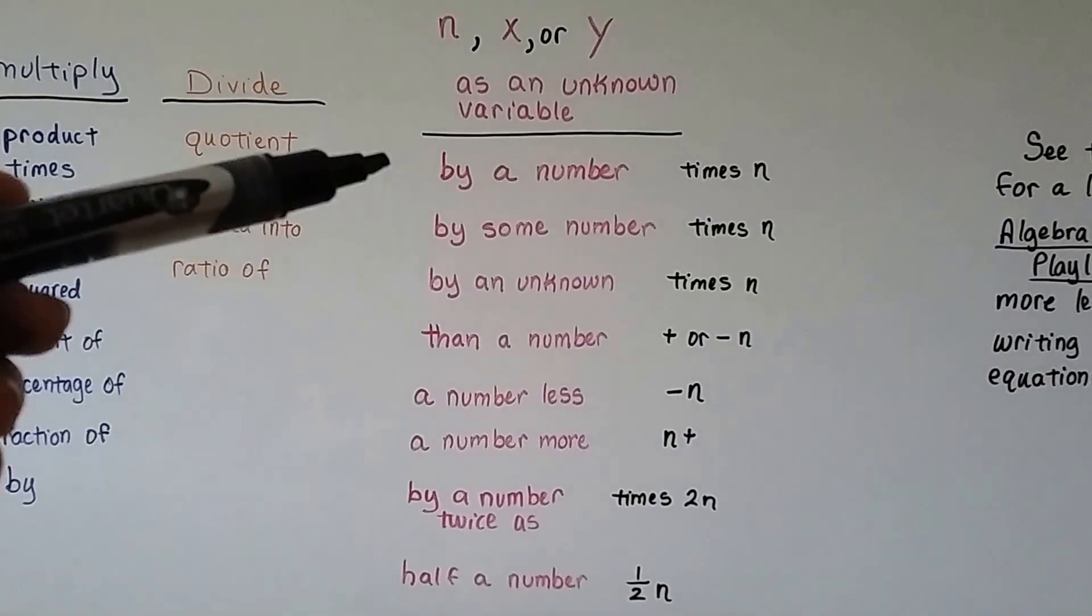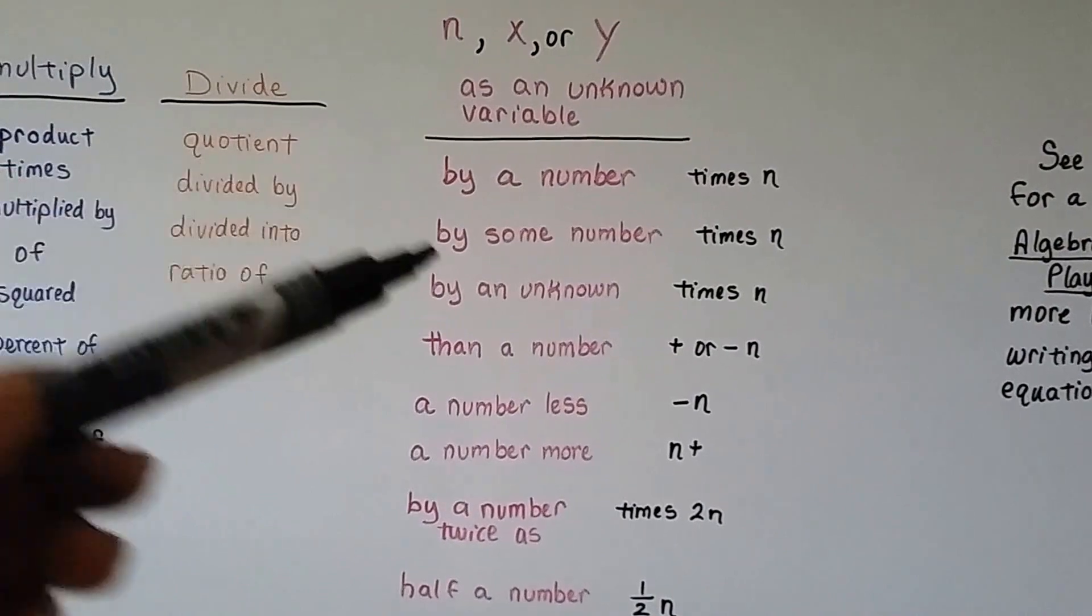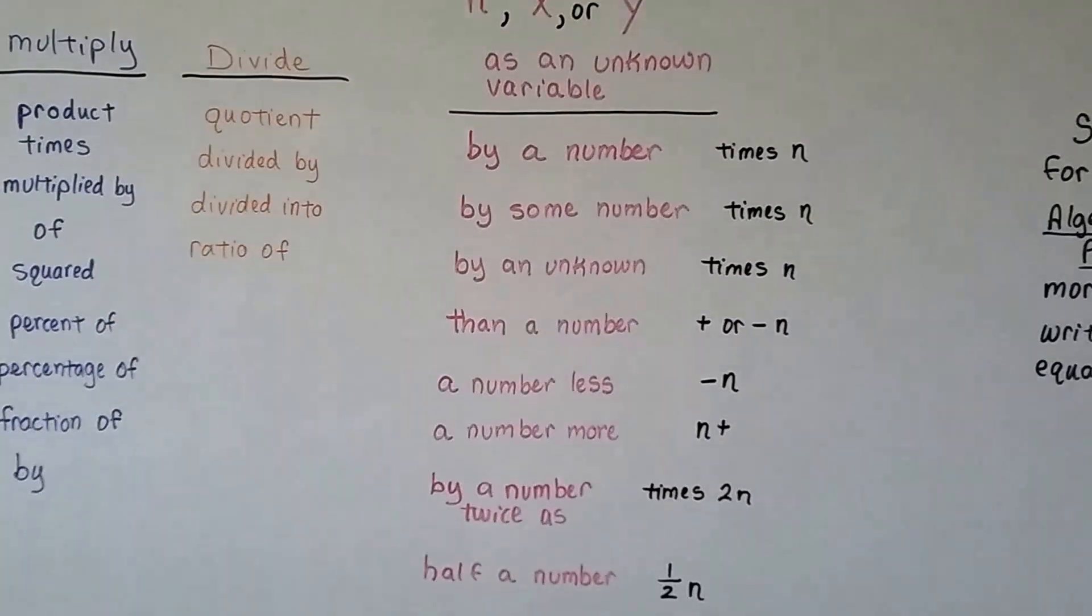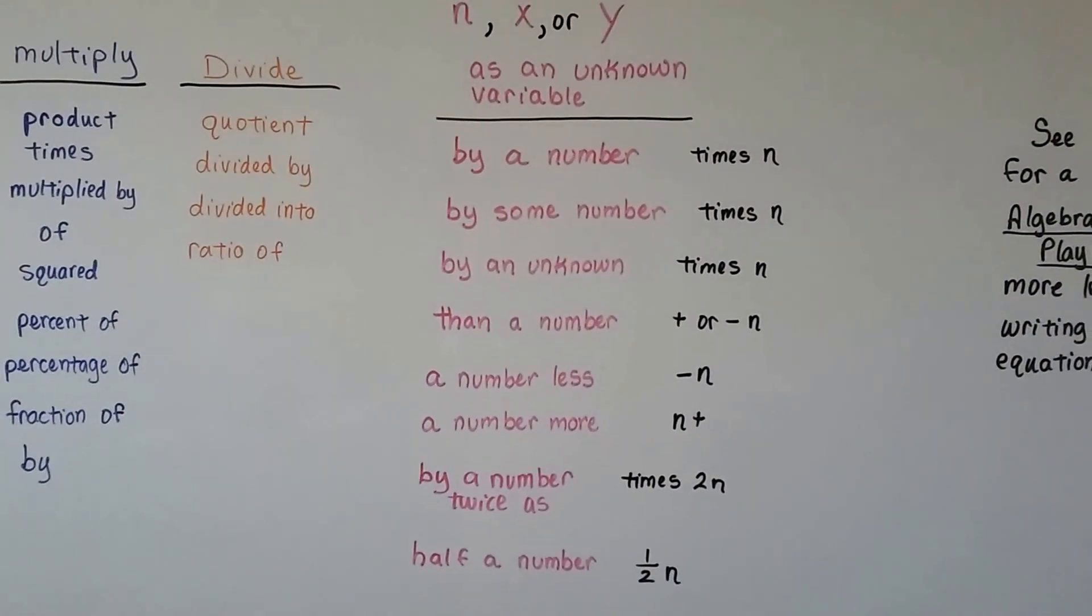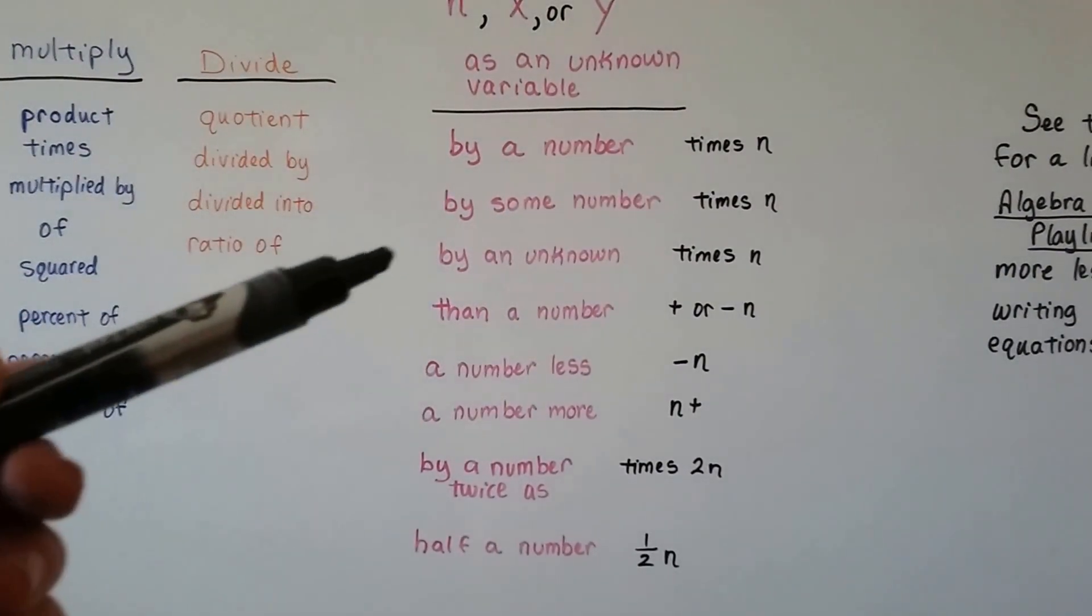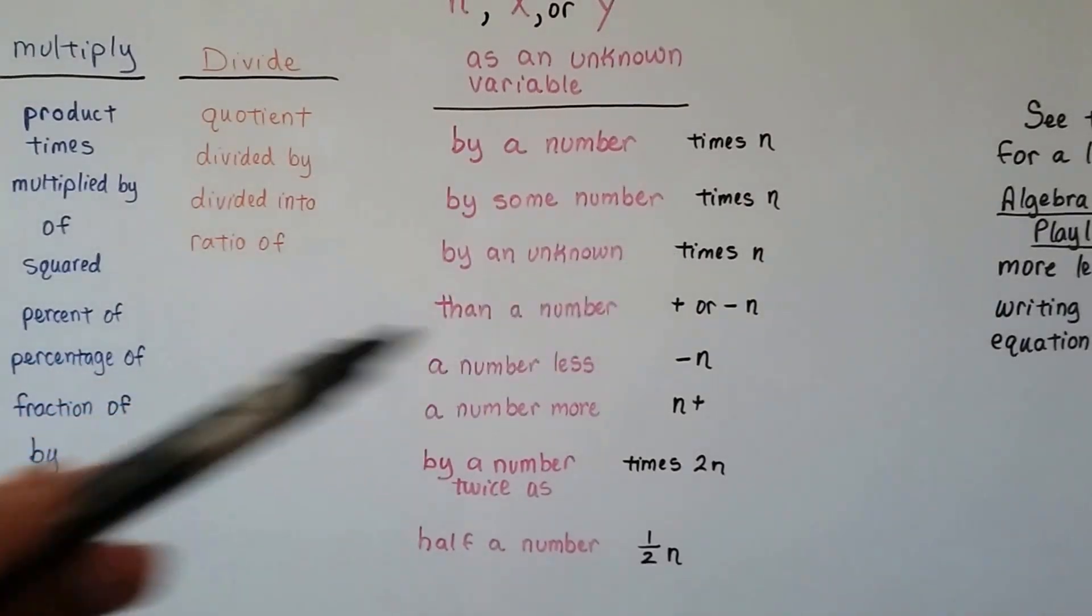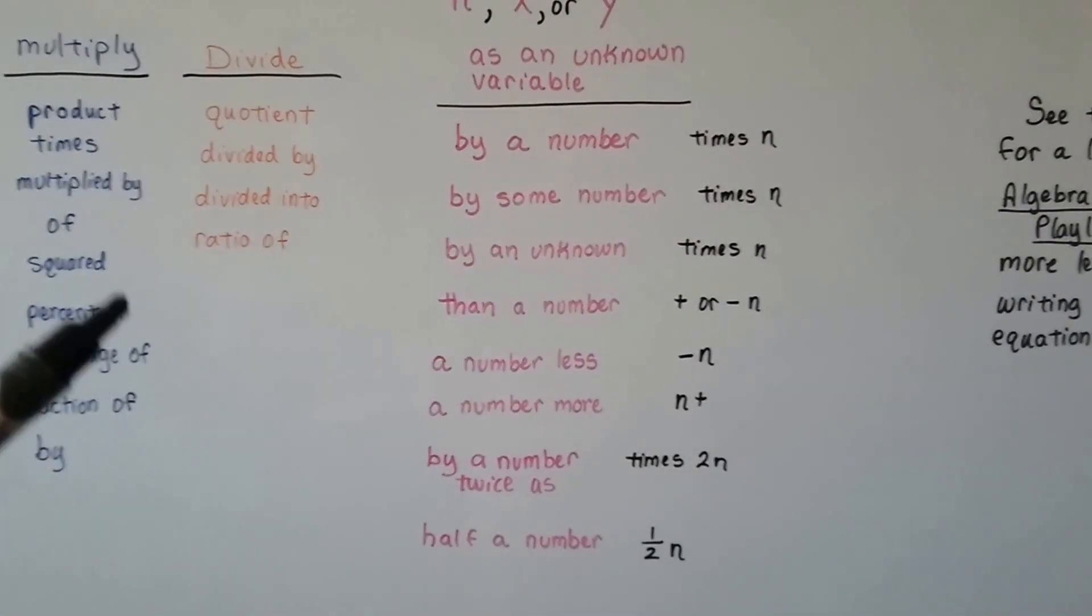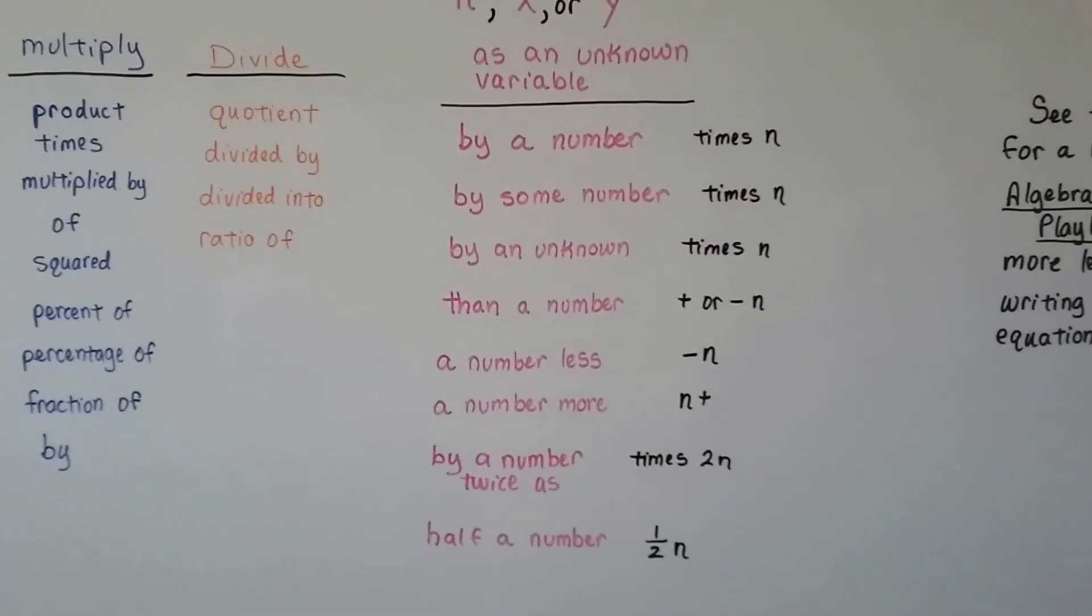If you see words like by a number, that means times that number, N, or X, or whatever variable you want to choose. By some number means the same thing. By an unknown also means the same thing. It just means times X, or N, or whatever that variable is that you choose.